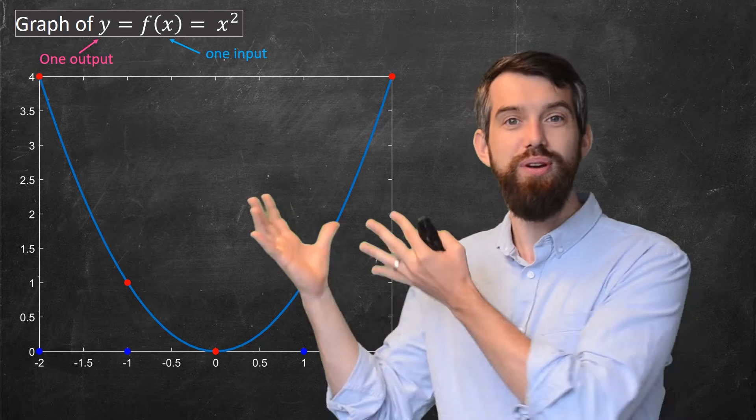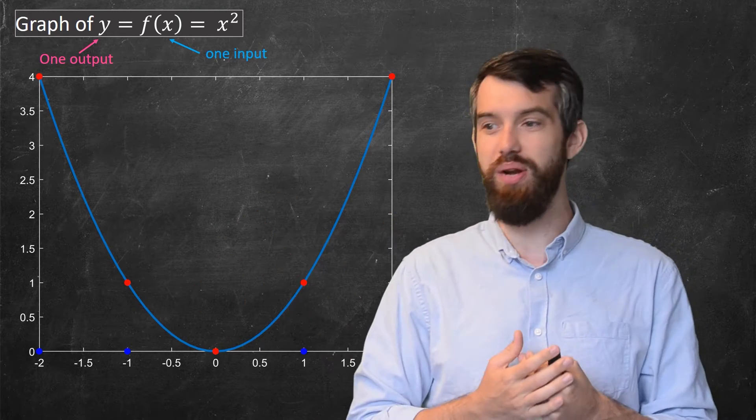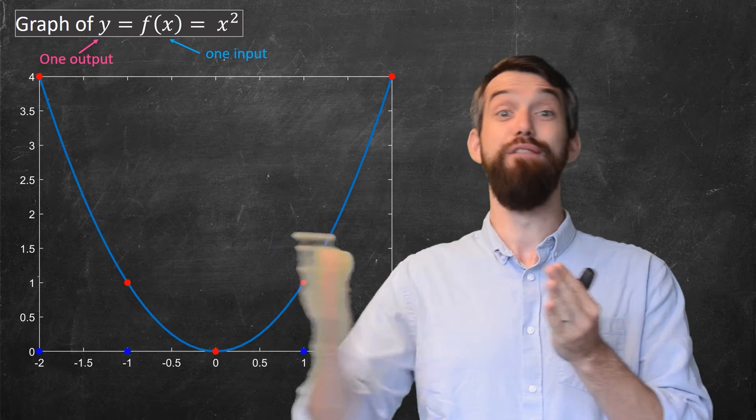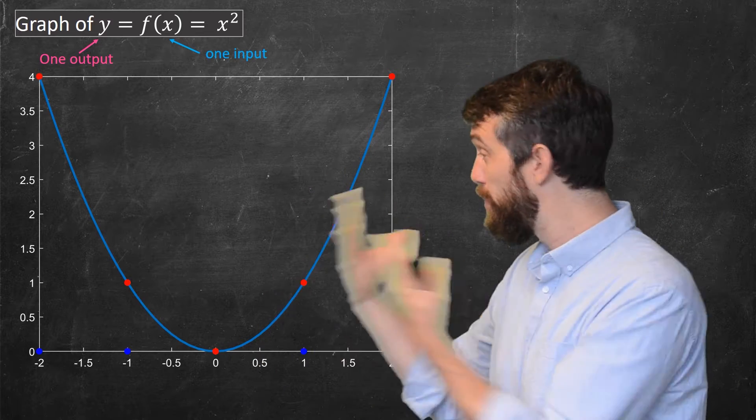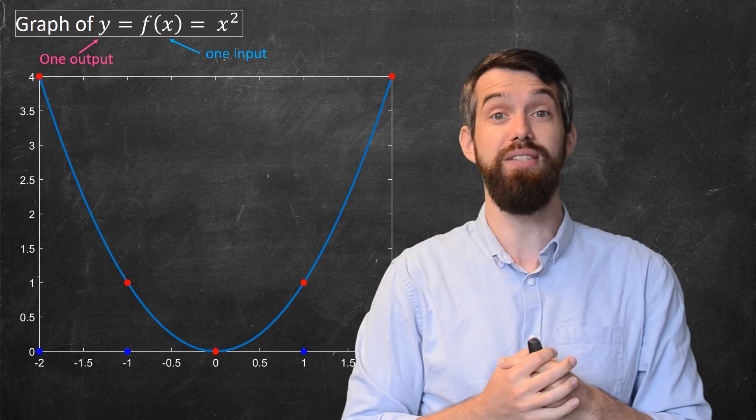You could then plot all of the heights above those input points that you specified. Indeed, when I go on the computer and tell it to plot this, this is what it's doing. It's breaking the x-axis into a very large number of points, figuring out the height above a very large number of points. It's just plotting all those points, and we just can't see the divisions between them.